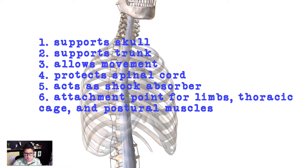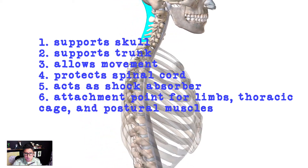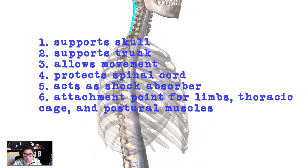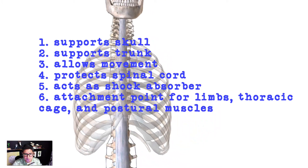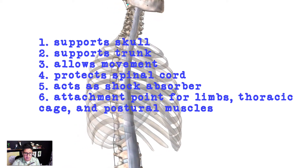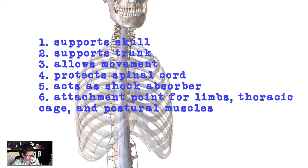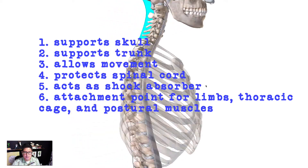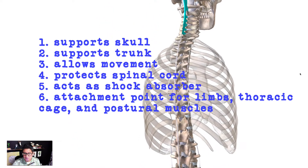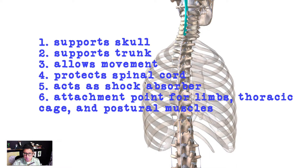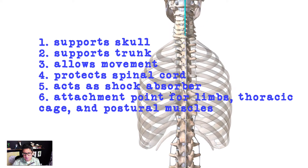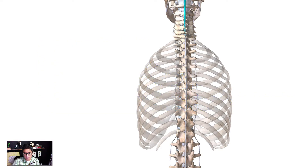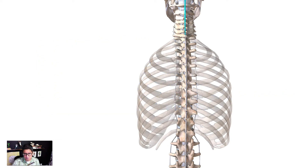Once we talk about individual vertebrae, we'll go into where the ribs of the thoracic cage attach on the vertebrae. The spine also serves as attachment points for the posterior muscles — all the tiny muscles, long muscles, and larger muscles in the back all have attachment points to the spine.